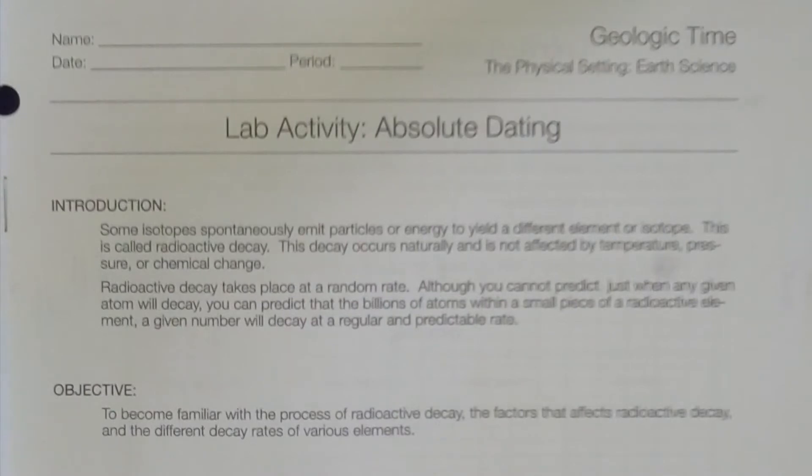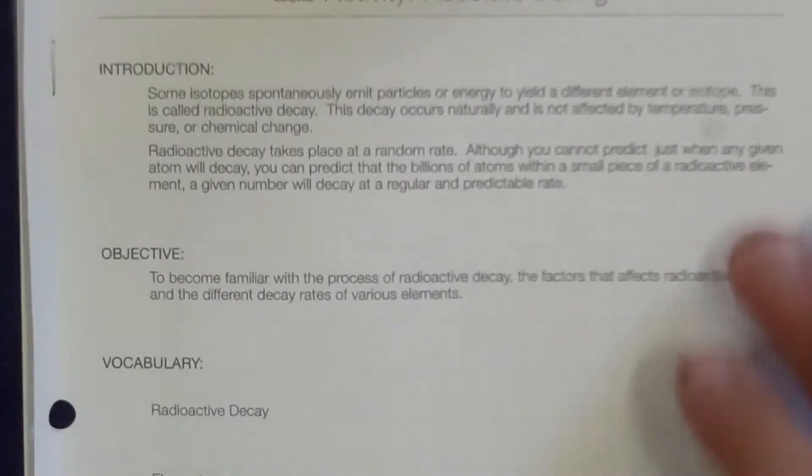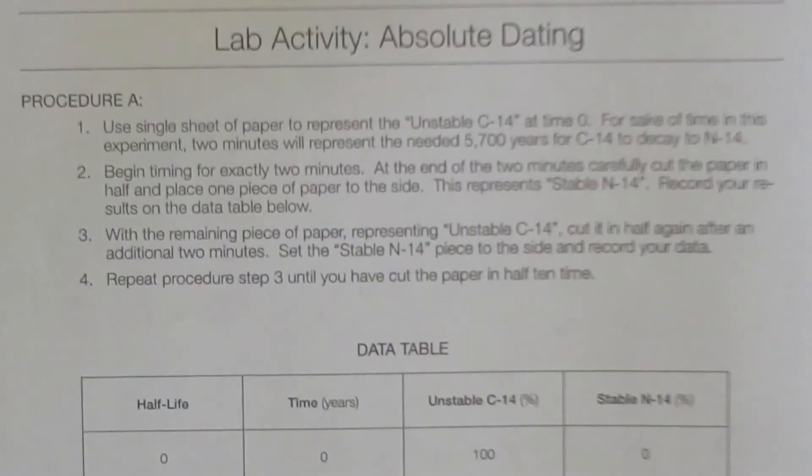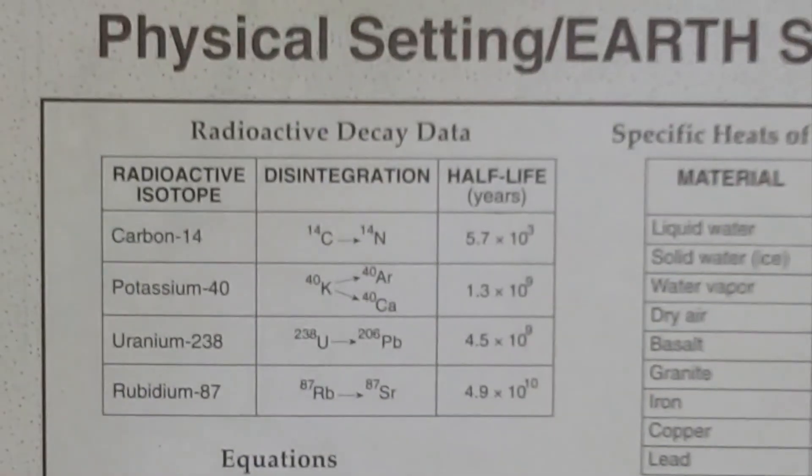Vocabulary words: radioactive decay, element, isotope, half-life, stable product, unstable product. You may follow the directions in Procedure A or you may solve them mathematically. Let's take a look at a mathematical solution to get you started. For this lab, we'll be taking a look at Carbon-14 changing into Nitrogen-14 with a half-life of 5,700 years.